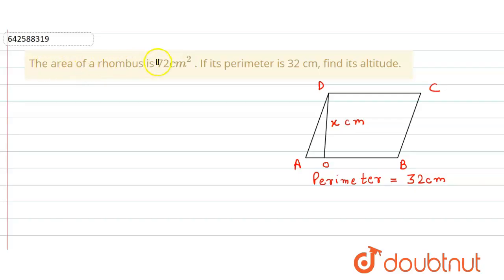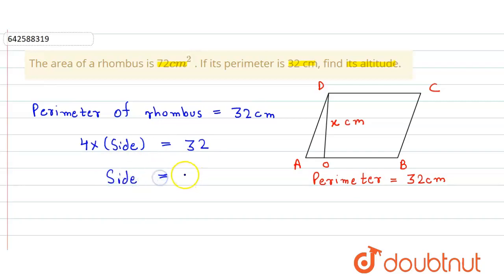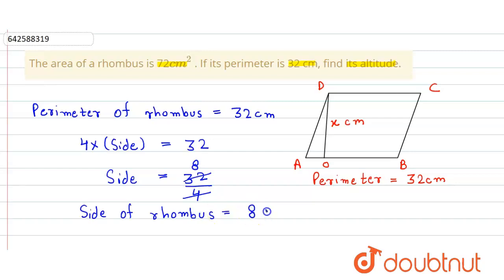In the given question, the area of a rhombus is 72 centimeter square and its perimeter is 32 centimeter, and we have to find its altitude. The perimeter of the rhombus is given as 32 centimeter. The formula for the perimeter of a rhombus is 4 into side, so 4 × side = 32, giving us side = 32 ÷ 4 = 8 centimeter.